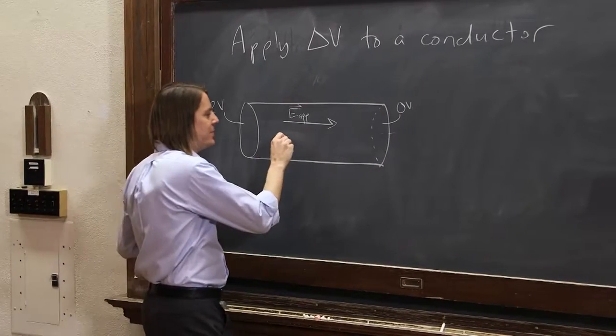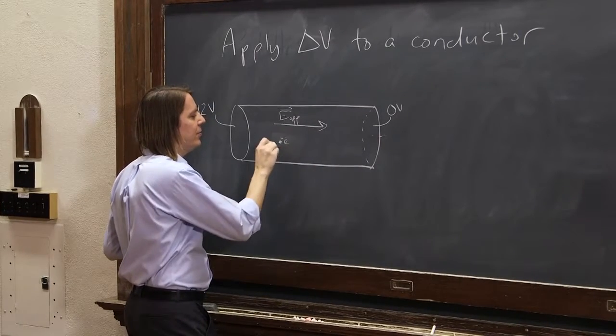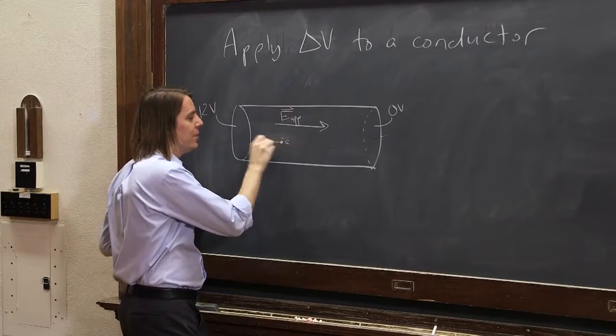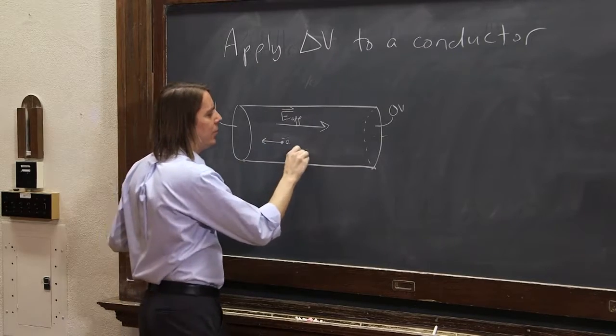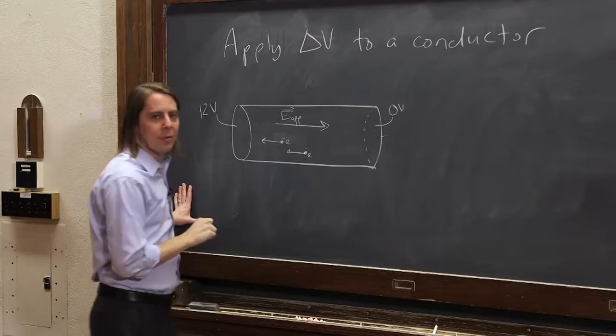When you apply that to a conductor, if there's negative charges - and in this case, the free charges were negative, they were electrons - they're going to feel a force that's going to make them want to move this way. So all the little electrons start to drift that way.